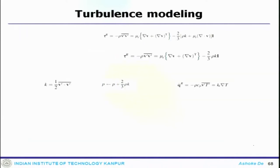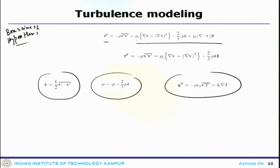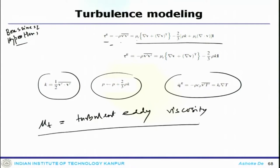An important hypothesis used to close these terms is the Boussinesq hypothesis. The Reynolds stress term is correlated with turbulent viscosity and molecular viscosity. Kinetic energy is computed accordingly, and the pressure-Reynolds stress is usually combined with the pressure gradient term. The turbulent pressure and thermal fluxes are calculated accordingly. The Reynolds stress term becomes a quantity correlated with mu_T, which is called the turbulent eddy viscosity.